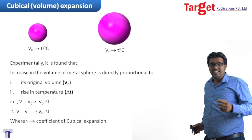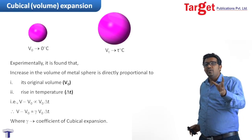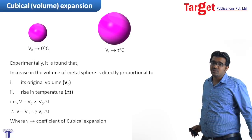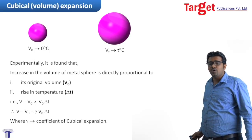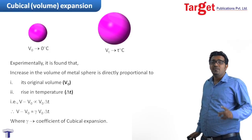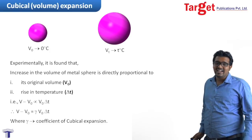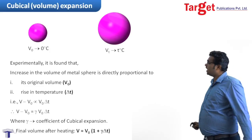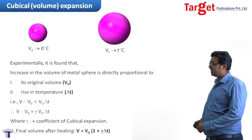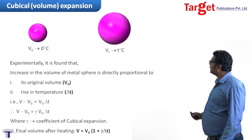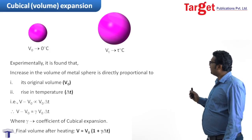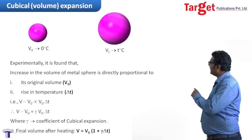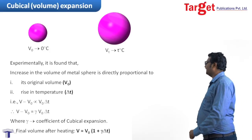Therefore, V minus V₀ is equal to gamma V₀ delta T, where gamma is the Coefficient of Cubical Expansion, also known as the Coefficient of Volume Expansion. The final volume after heating is given as V = V₀(1 + gamma delta T).